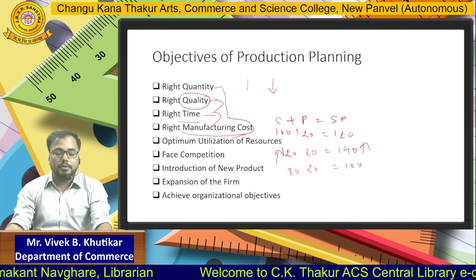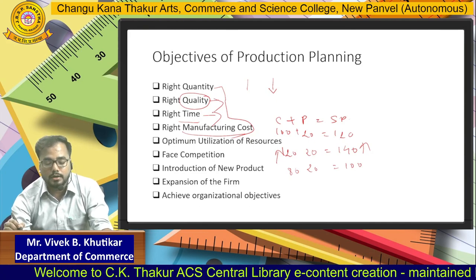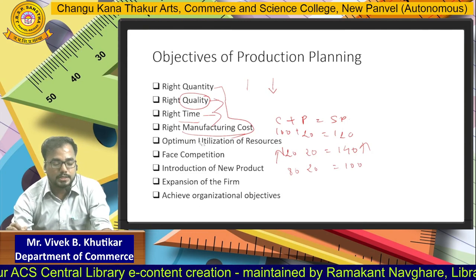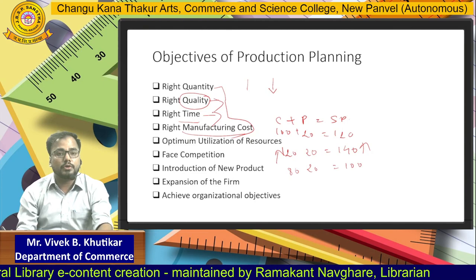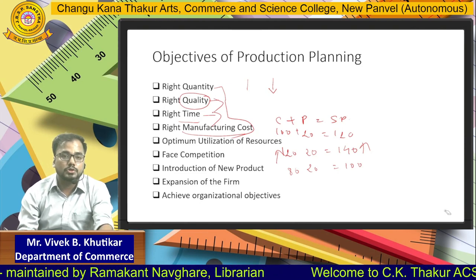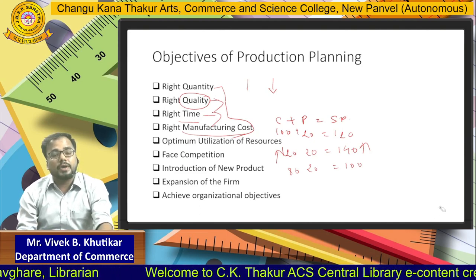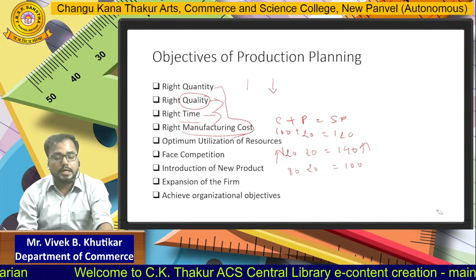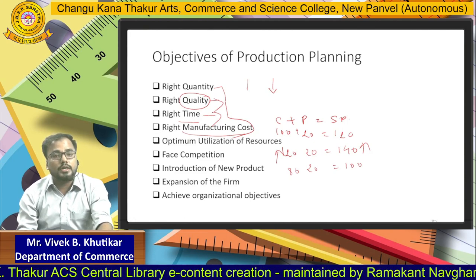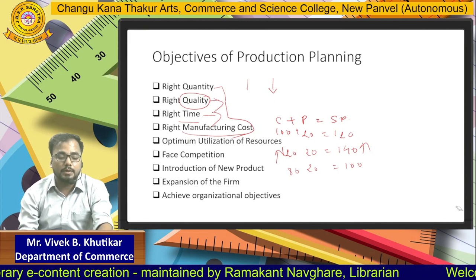The next objective is Optimum Utilization of Resources. Whatever resources are required for production — man, material, machinery, labor and equipment — we have to utilize them optimally. Next is Face Competition. One of the most important objectives of Production Planning is that the company is capable of facing competition in the market. Because we are producing at the right quantity, right quality, right time, and our manufacturing cost is under control, we can capture a larger market segment, earn consumer loyalty, and enter into market diversification programs that help us face competition.